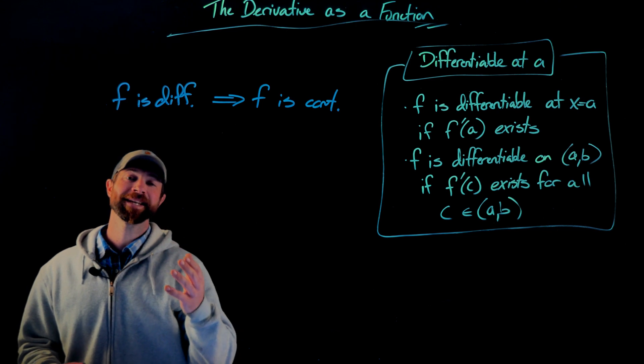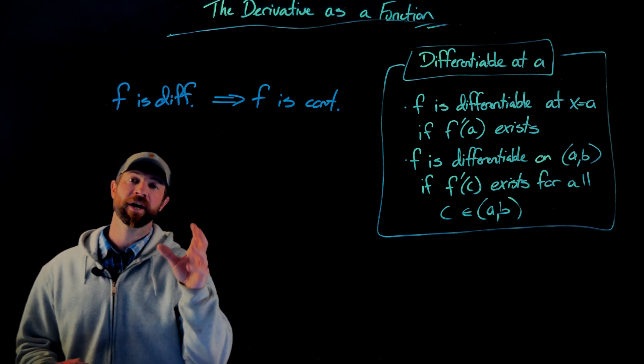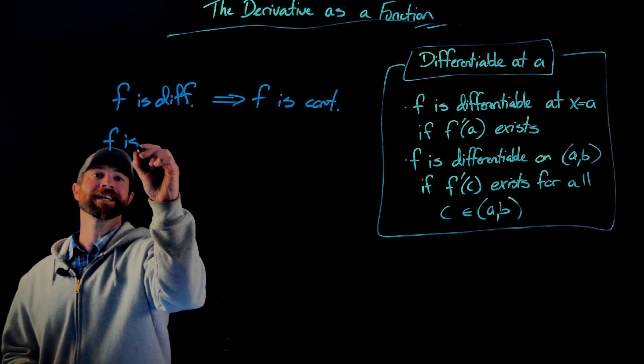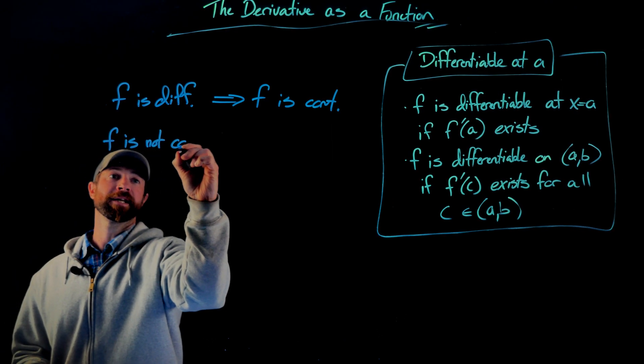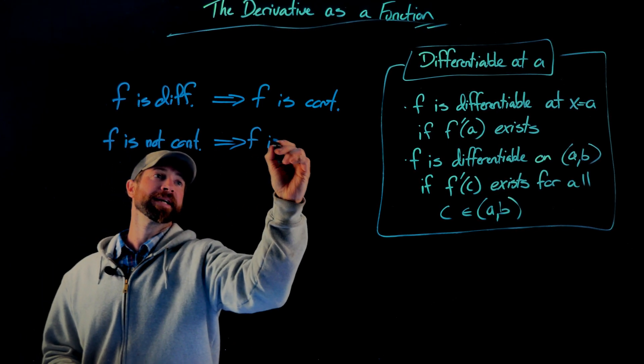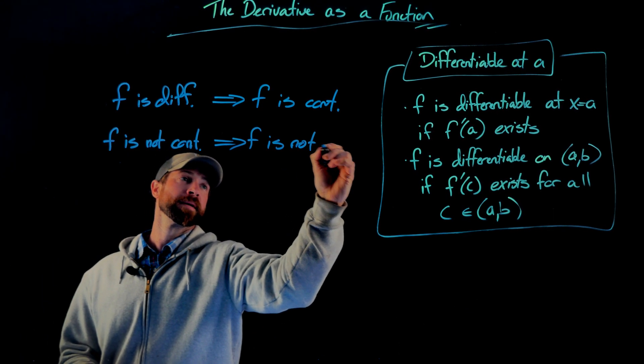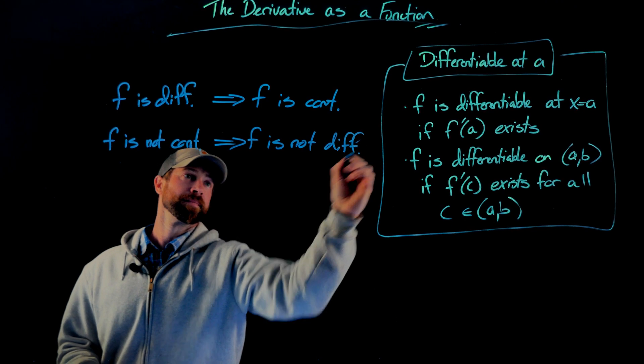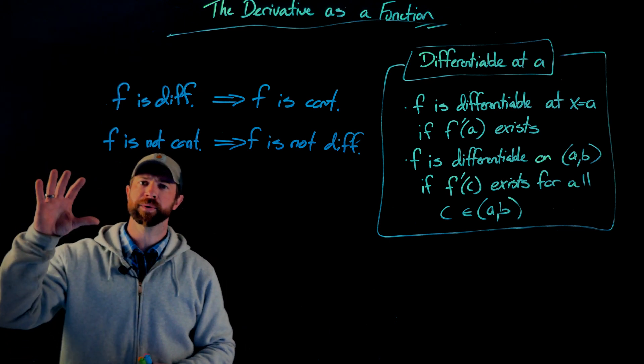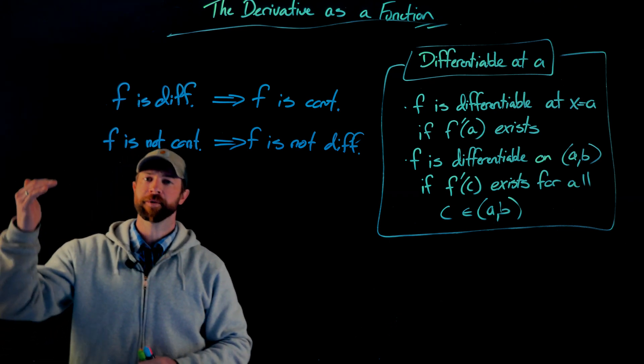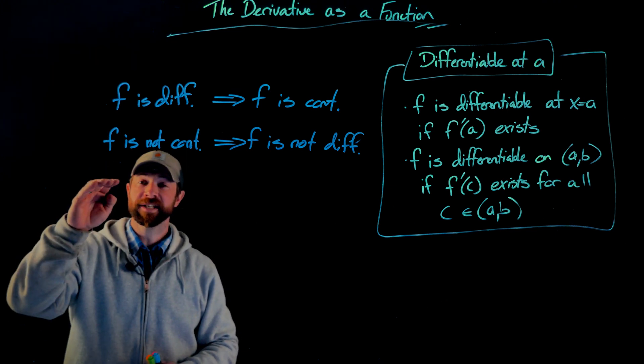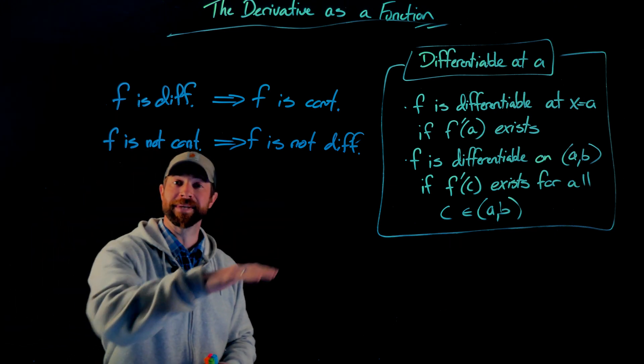And then if you have any experience with if-then statements, the contrapositive of the statement must also be true. And that is, if f is not continuous, then f is not differentiable. Again, I'm speaking in shorthand. This is at a point or on an interval. This means it'll hold both true. But again, differentiability implies continuity. If you're not continuous, then you absolutely can't be differentiable.